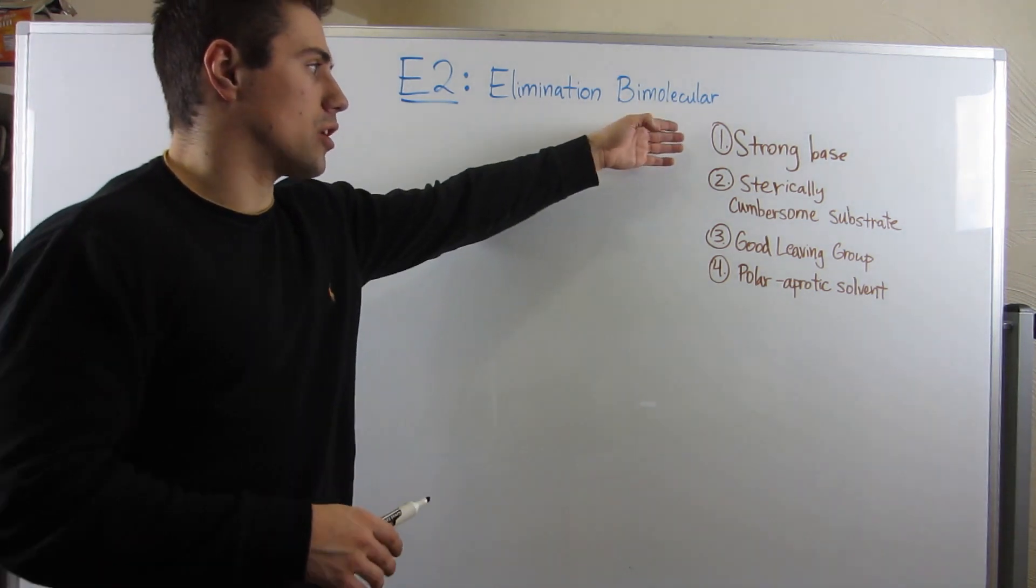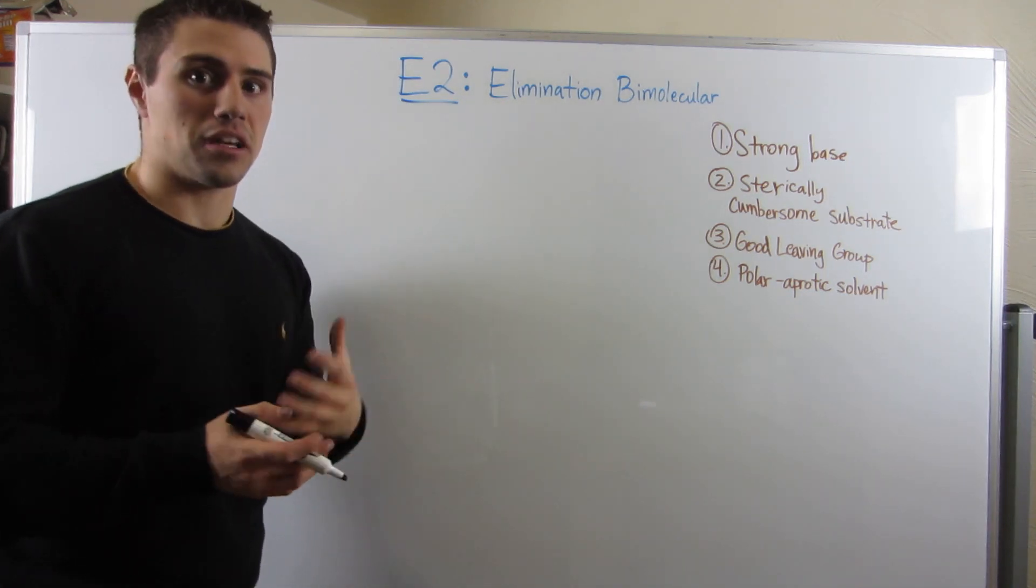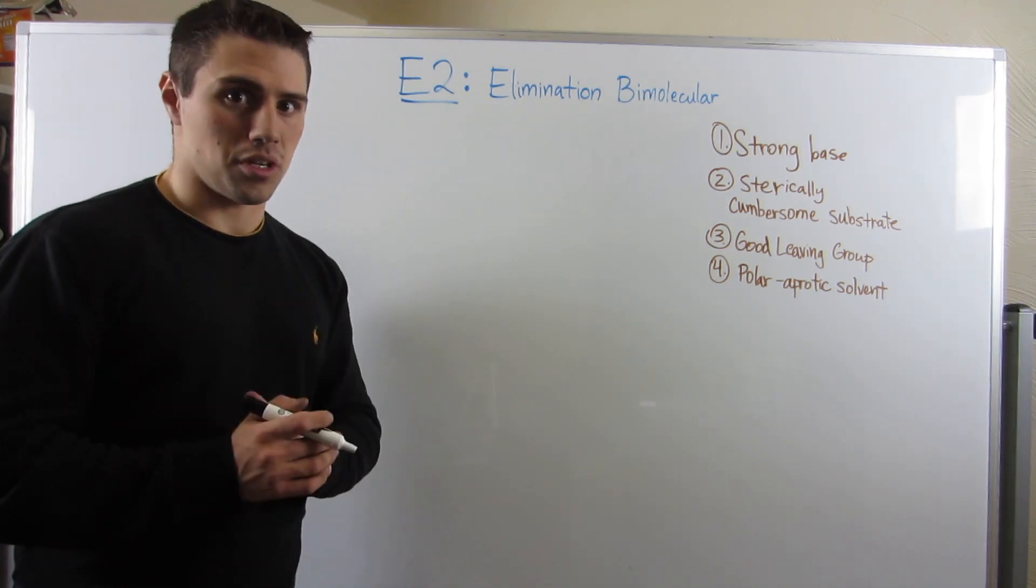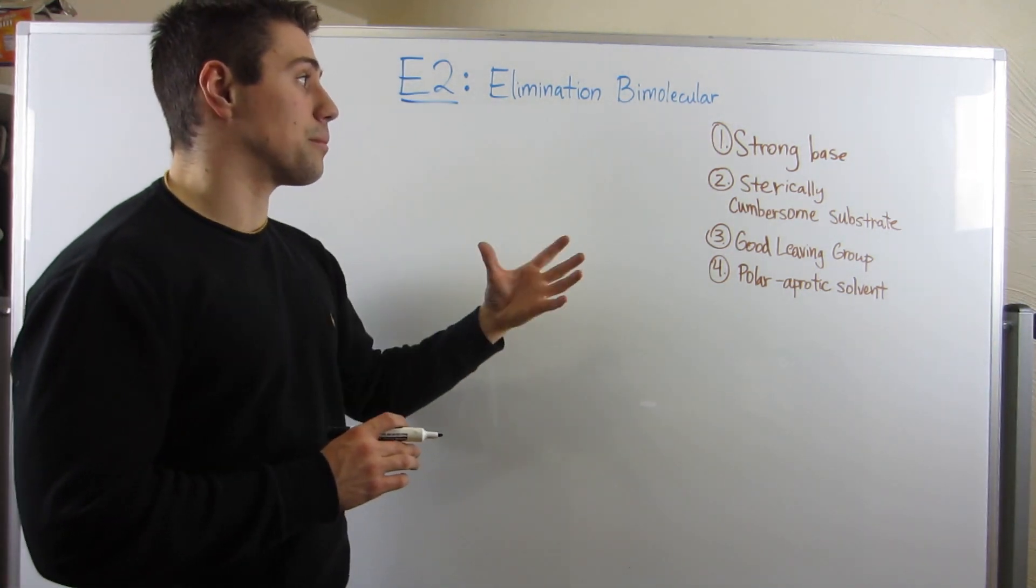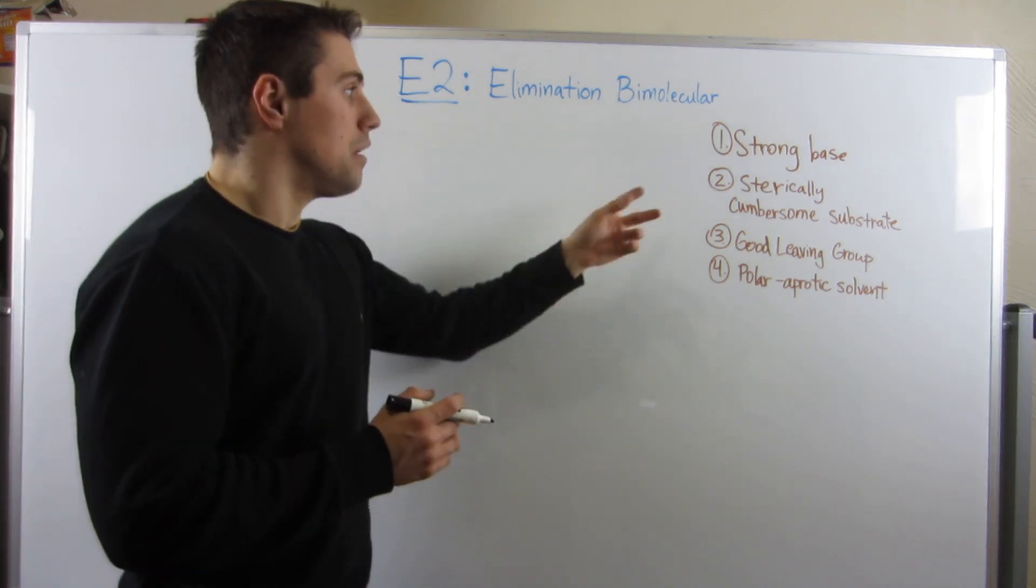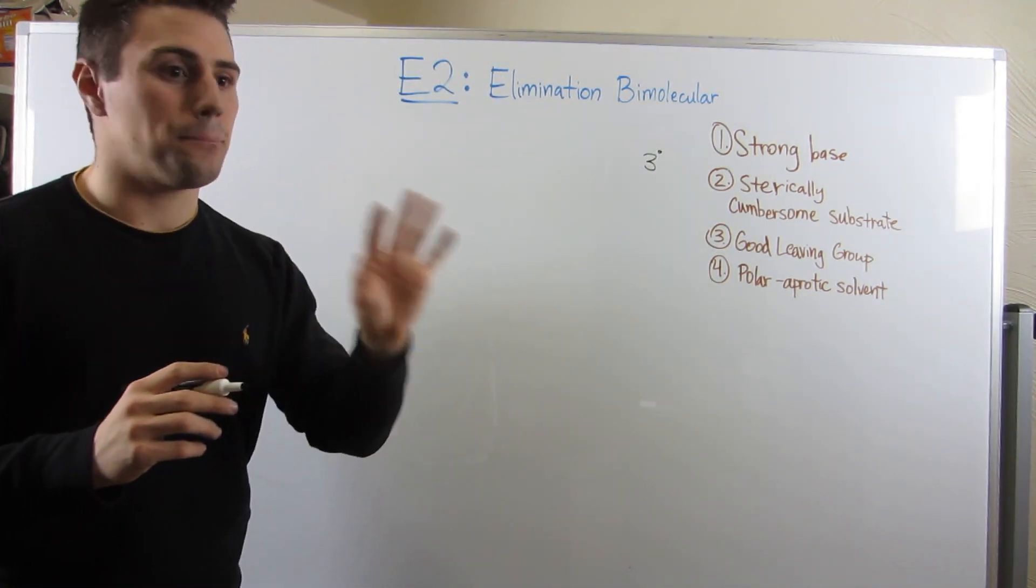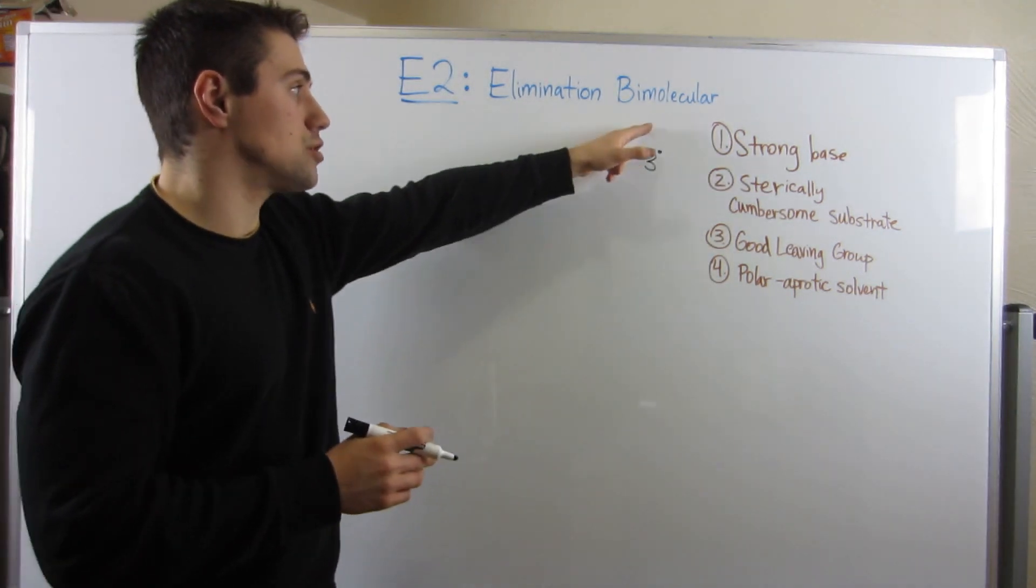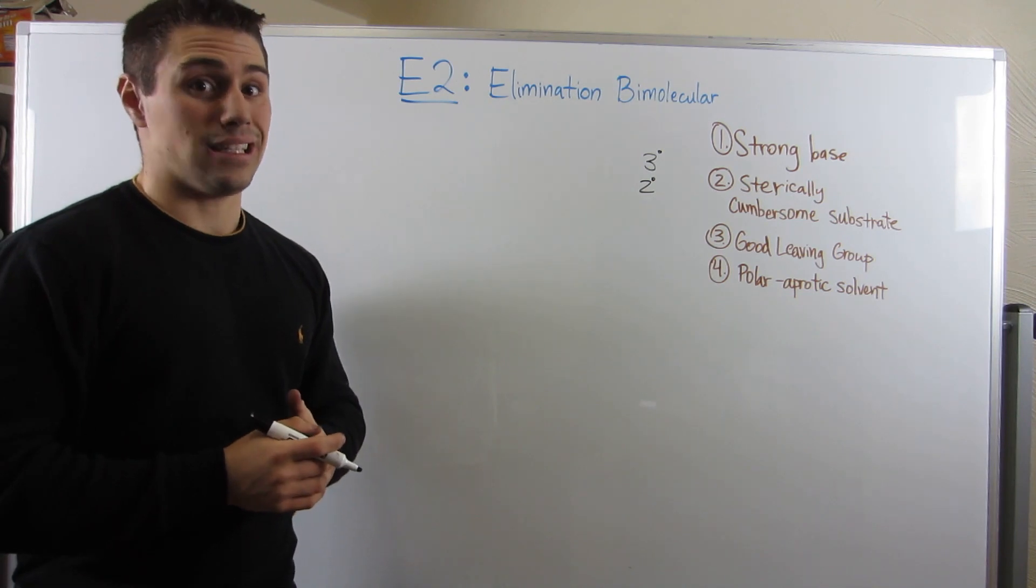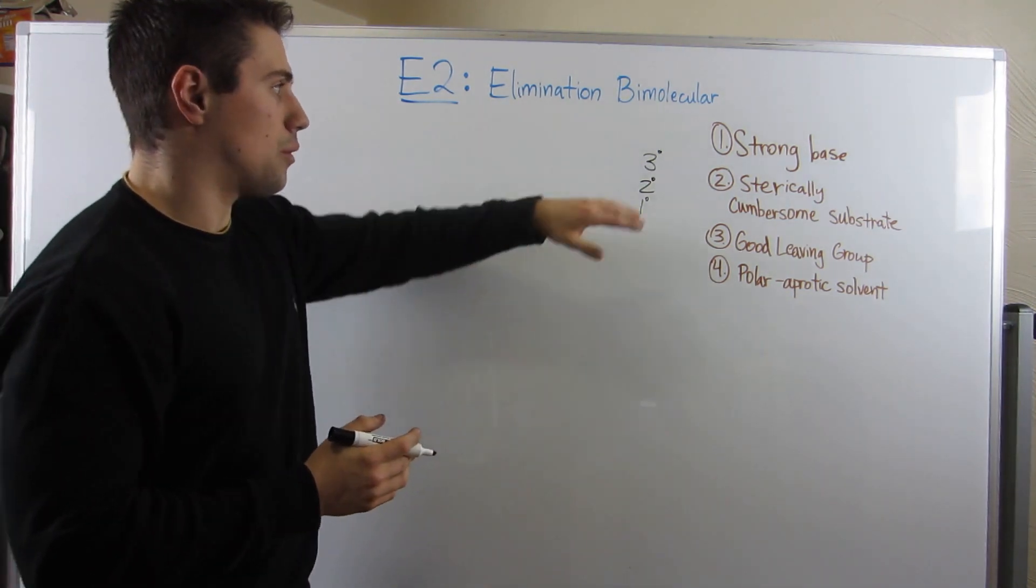I'm going to erase this. I want to go over some finer details of E2, the conditions you look for, like how we did that for SN2. A little quirks, and then we'll be done with E2. Now that we saw an example, I want to go over our E2 checklist and then do another example, and then go into one specific aspect of E2 that we need to cover. Things you need to look for here. You need a strong base. The size, whether it's big or small, that's what we're going to talk about in a bit. But you need a very strong base, because you're grabbing that proton the first step.